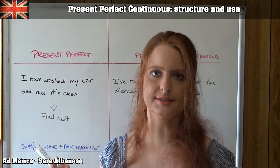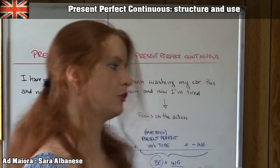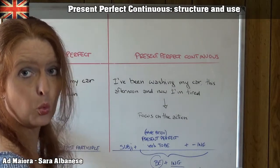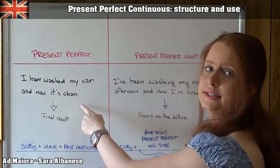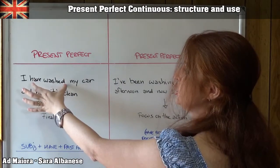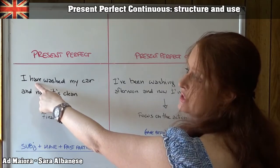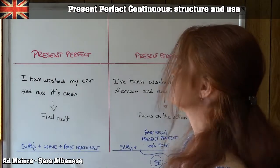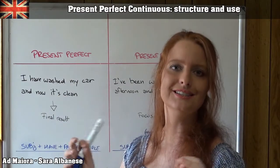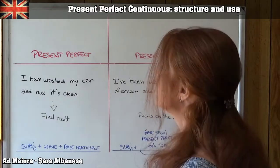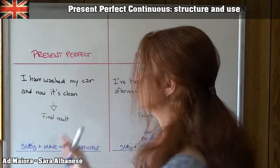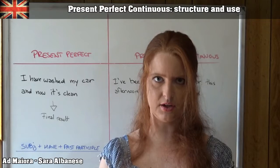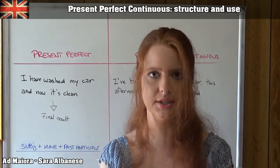Let's start with two examples and then we talk about them. The first example is a present perfect sentence: I have washed my car and now it's clean. 'Have washed' is a present perfect verb — the auxiliary verb 'to have' and the past participle 'washed'. Wash is a regular verb, so I just add -ed at the end of the base form. In this sentence, I am emphasizing the final result — something I have concluded, something I can show you.